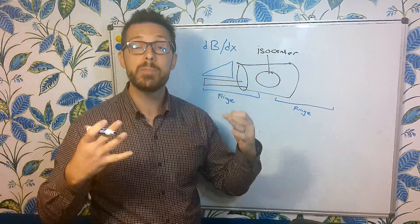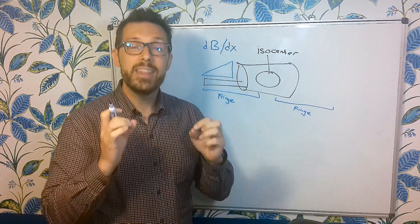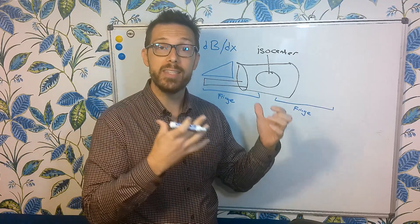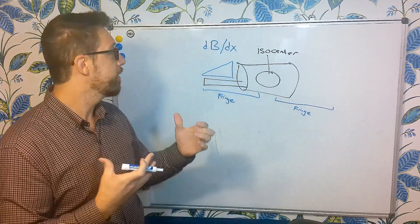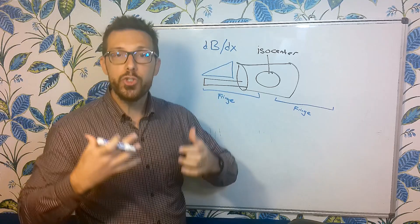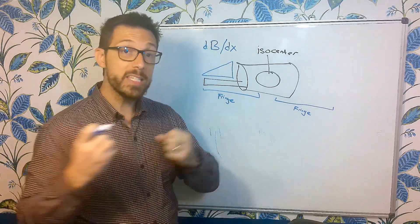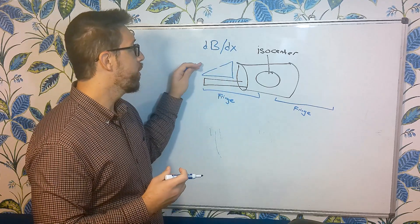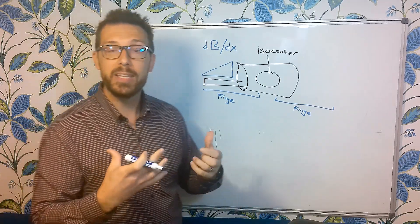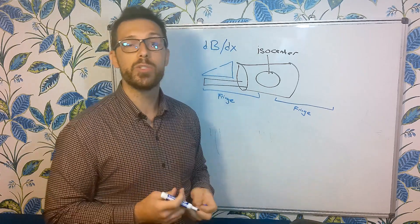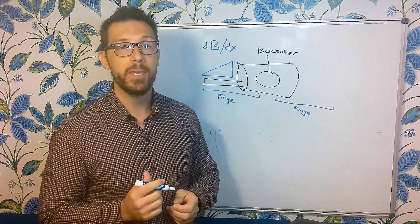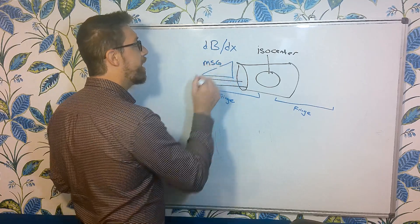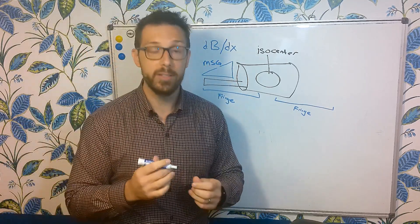And that's what describes the magnetic spatial gradient. And again, this is truly what defines the threats associated with this B zero or this static magnetic field. When we start thinking of translational forces, this missile effect, we're really concerned with this magnetic spatial gradient or this gradient of magnetic field. It gets stronger and stronger as we approach this MRI unit. So this is called the magnetic spatial gradient or sometimes it's called the spatial gradient field.